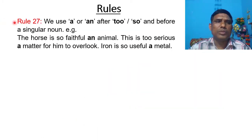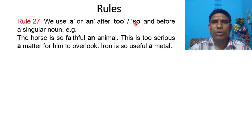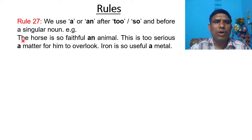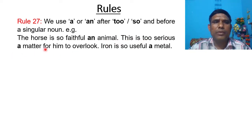Rule number 27: We use A or AN after 'too' or 'so' and before a singular noun. For example, 'The horse is so faithful an animal.' 'This is too serious a matter for him to overlook.' 'Iron is so useful a metal.'